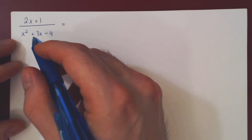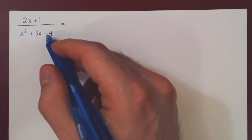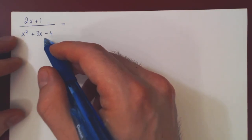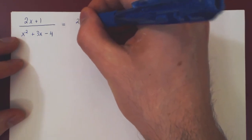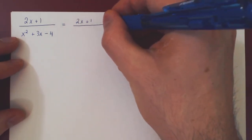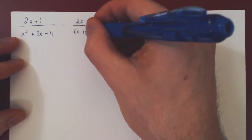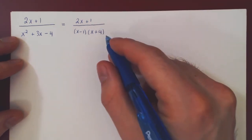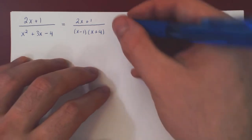The second step is to factor the denominator into a product of linear factors or irreducible quadratic polynomials. By inspection, x squared plus 3x minus 4 factors as the product of x minus 1 times x plus 4 — two linear factors. And now we can look at our partial fraction decomposition.